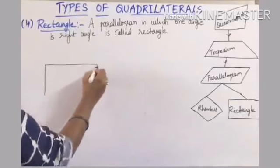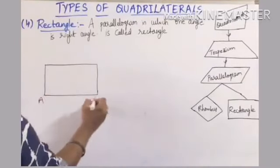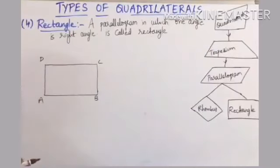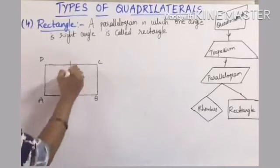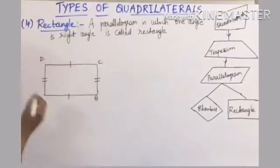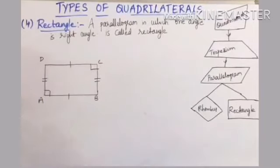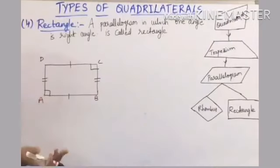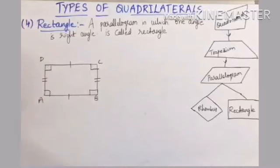When one angle in a parallelogram is 90 degrees, all other angles also become 90 degrees. Because opposite angles are equal, angle C is also 90. And since adjacent angles are supplementary, angle A plus angle B equals 180 — if A is 90, then B is also 90, and similarly D is also 90.